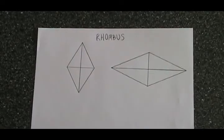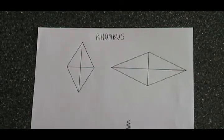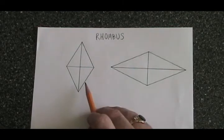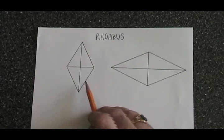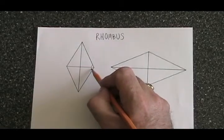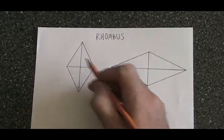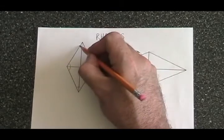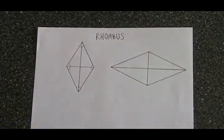The properties of a rhombus are similar to the properties of a square. A rhombus is a quadrilateral, and like all quadrilaterals, the four angles on the inside, if you add them up, have to add up to 360 degrees.